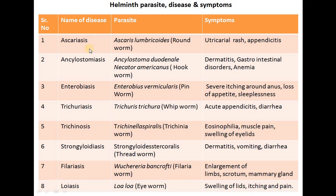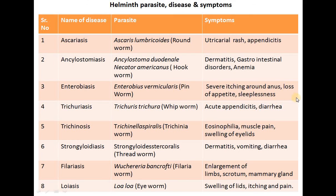These are helminth parasites and their symptoms. Ascariasis is caused by Ascaris lumbricoides (roundworm); symptoms are urticarial rash and appendicitis. Ancylostomiasis is caused by Ancylostoma duodenale (hookworm); symptoms are dermatitis, gastrointestinal disorder and anaemia. Enterobiasis is caused by Enterobius vermicularis (pinworm); symptoms are severe itching around the anus, loss of appetite and sleeplessness.